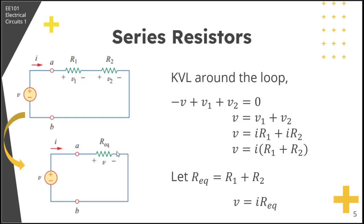From that, we can observe that two resistors in series can be replaced by one equivalent resistor, whose resistance value is equal to the sum of the two resistors in series.